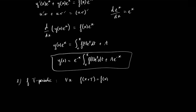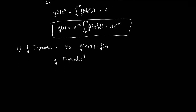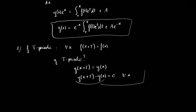Knowing that, we are wondering: is there a solution y of the previous equation that is also T-periodic? Saying that y is T-periodic means that y(x + T) equals y(x). In other words, y(x + T) minus y(x) is supposed to equal 0 for any value of x. So let's go ahead and develop this formula based on the expression of y(x) that we identified before.